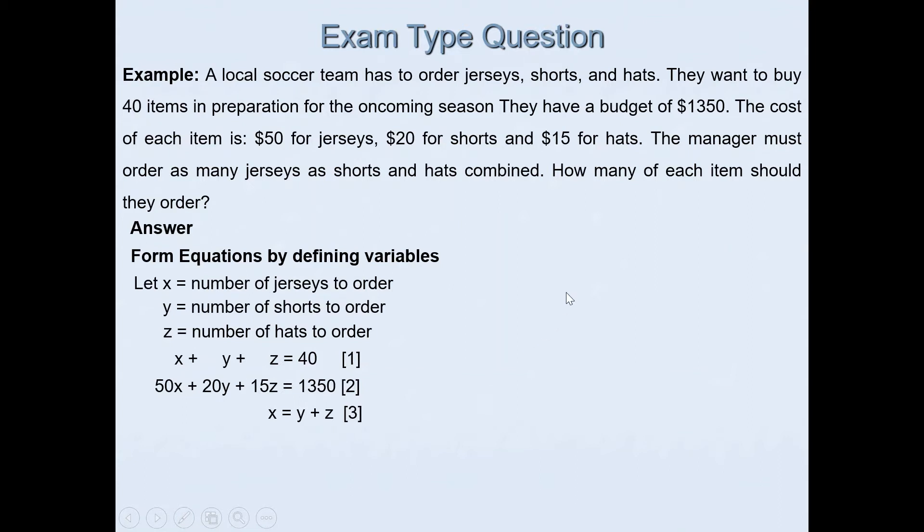Because the graphics calculator is programmed in the form anx + bny + cnz = dn, you will need to ensure that all of your equations are arranged in this form. Equations one and two are already in this form anx + bny + cnz = dn, with all the variables on the left hand side of the equation and a constant on the right hand side.